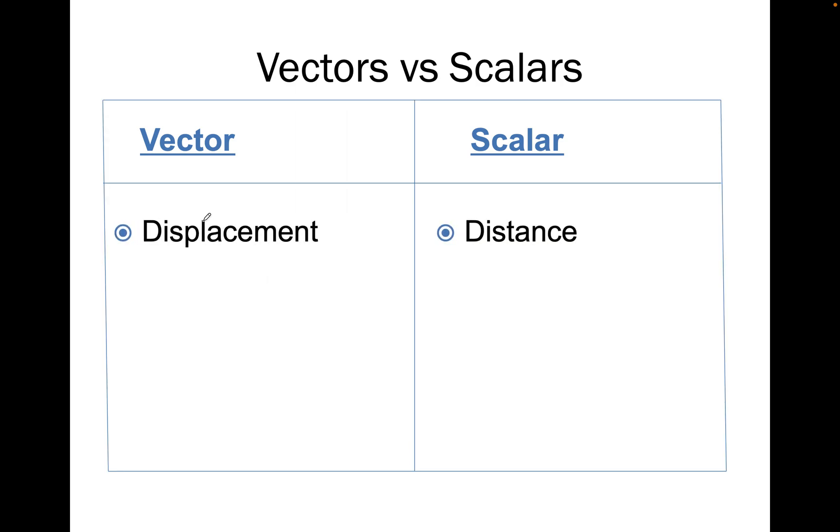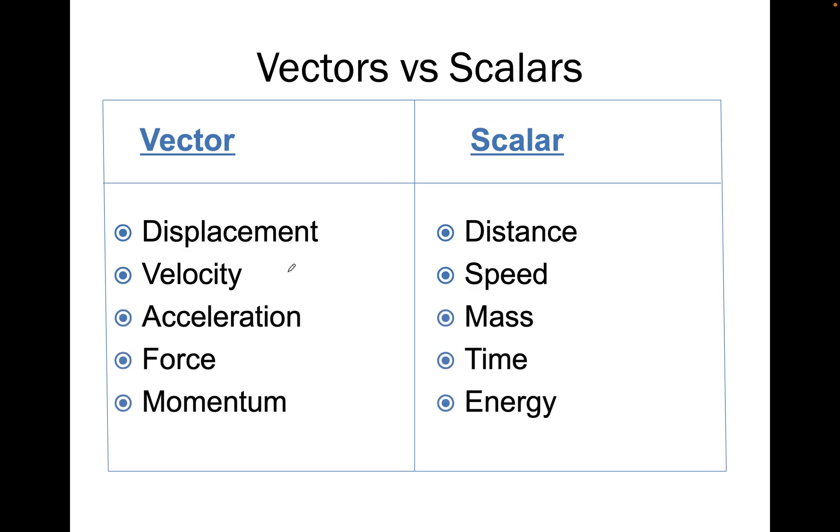So in class we went through the differences. We have distance and displacement, speed and velocity, and then other ones like mass, time, energy. There's a few more, like power and so forth, but we don't need to know too many. For vectors, we had acceleration, force, momentum. We aren't studying this yet, but we did study these four.